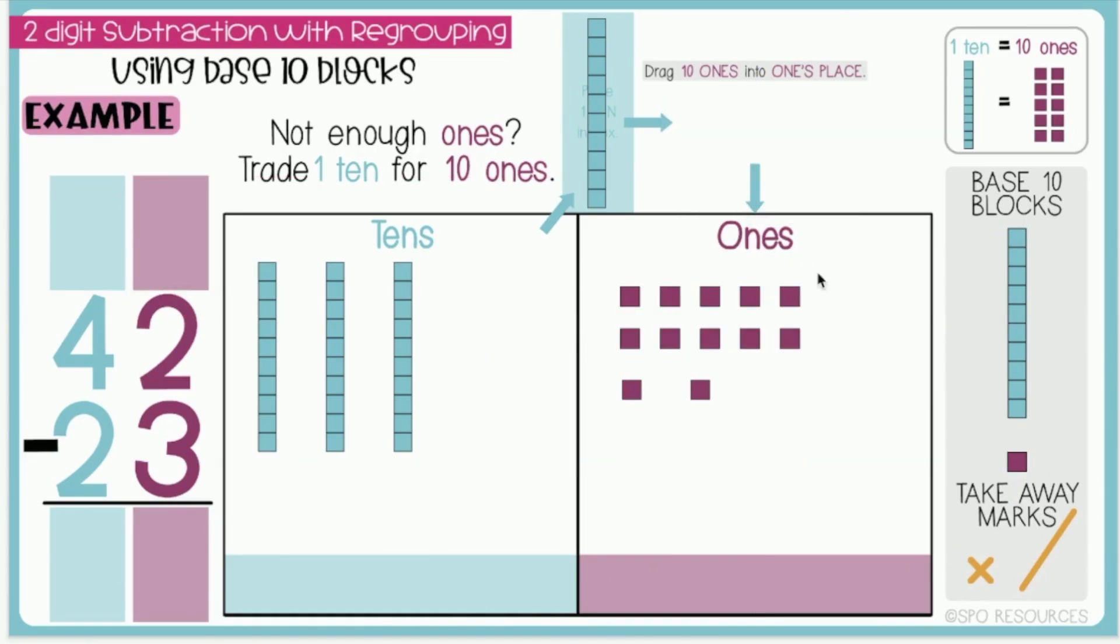I now have 12 ones in the ones place. In my equation, I took away one 10, so I'm going to cross out the 4 and type a 3 because we are left with three 10s. I now no longer have just two ones in the ones place. I have 12 ones because I have 10 ones plus two ones. I will type 12 in the ones.